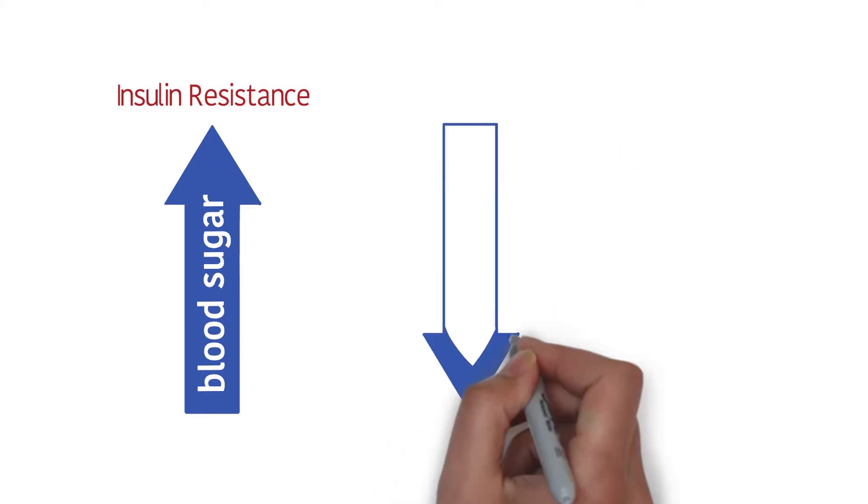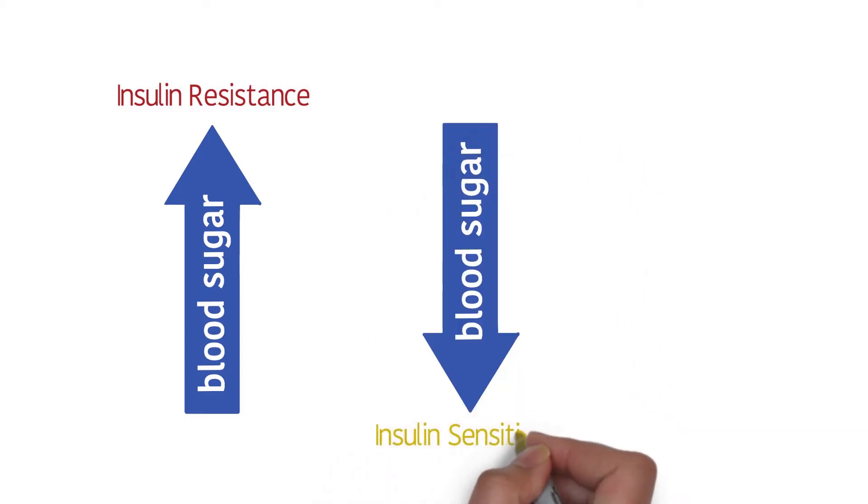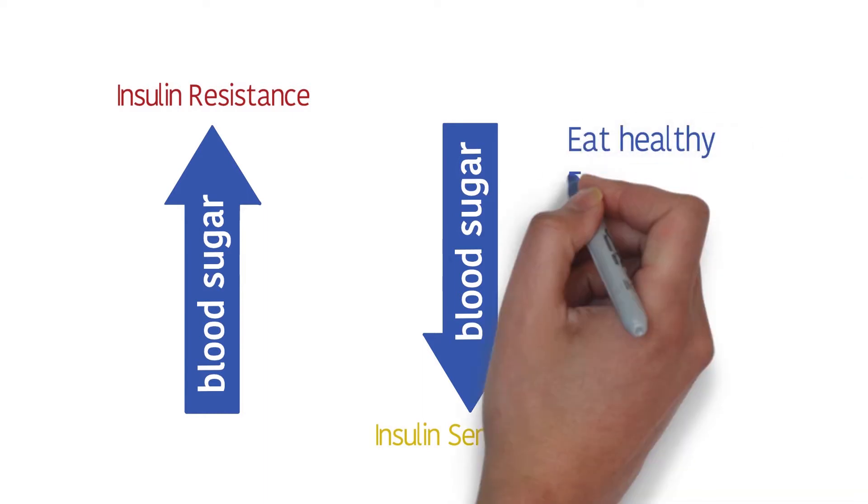Insulin sensitivity is the reverse of insulin resistance. Your cells react well to insulin, so your blood sugar can drop fast. You can raise your insulin sensitivity and lower your insulin resistance by eating healthy, getting enough exercise and sleep, and lowering your stress level.